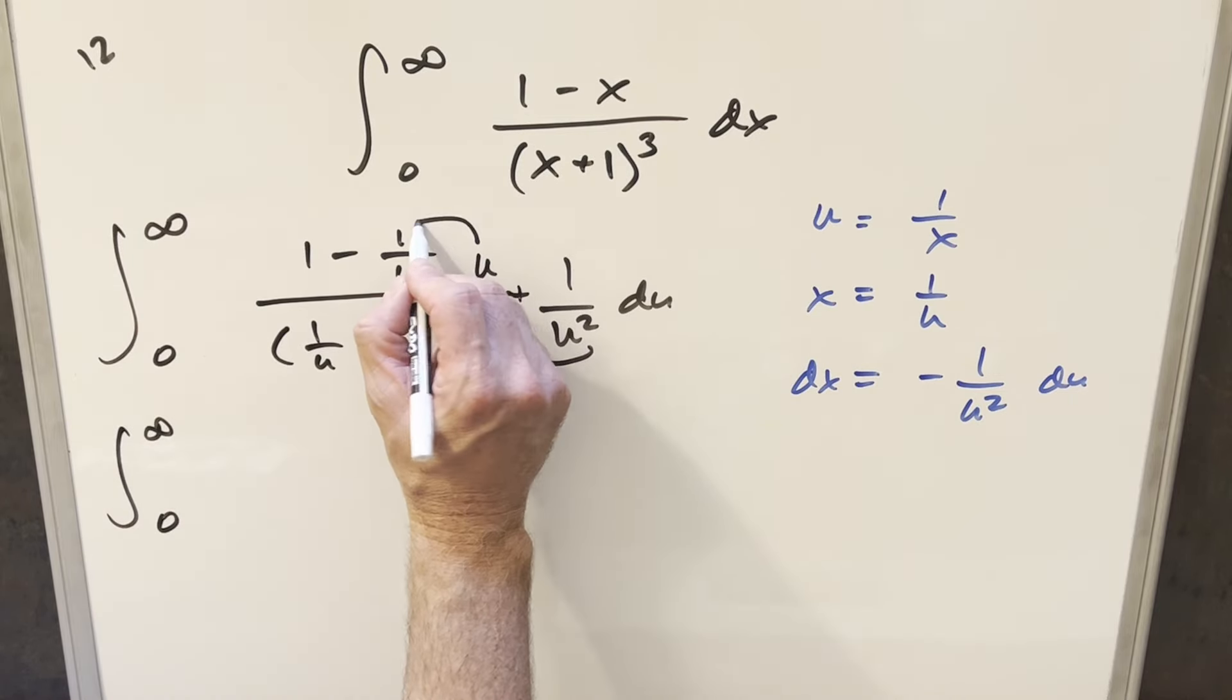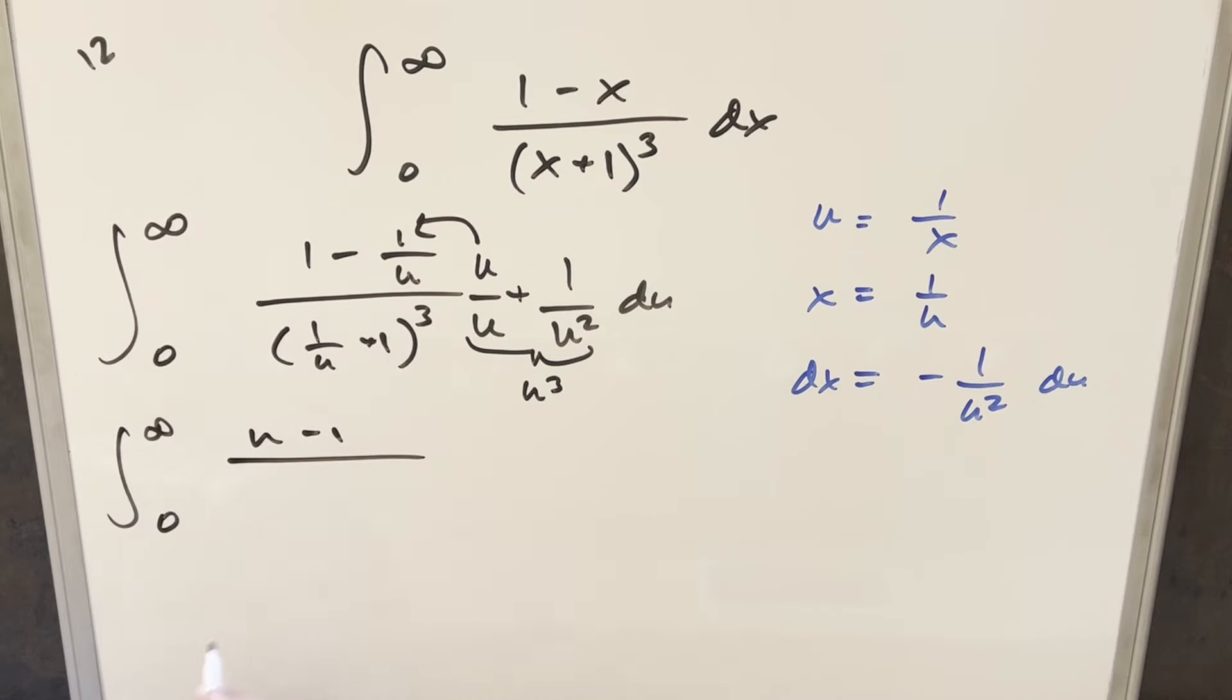So doing this, multiplying in first the u, we're going to end up with u minus 1 here. Then next, multiplying in u cubed inside the cube root, that's just going to be like multiplying in a u. And that's going to transform this. The first term is going to become 1, and this is going to become just a u.